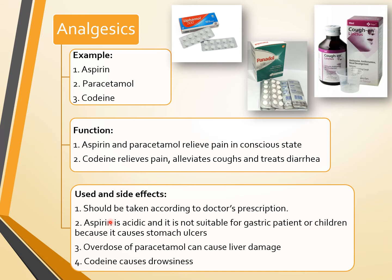Use and side effects: medicines should be taken according to doctor's prescription. Aspirin is acidic and not suitable for gastric patients or children because it causes stomach ulcers. Overdose of paracetamol can cause liver damage. Codeine can cause drowsiness.